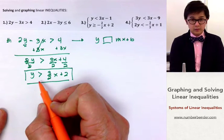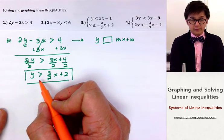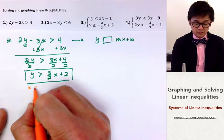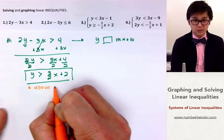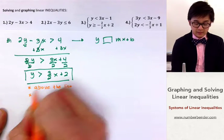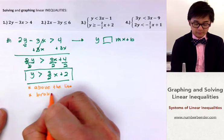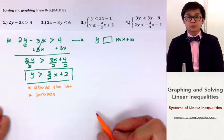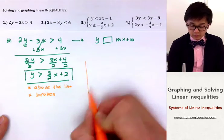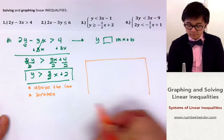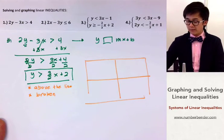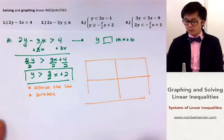Things to remember when graphing an inequality: if it's greater than or greater than or equal to, you will shade above the line. Since this is a greater than symbol, you use a broken line to denote the difference between greater than and greater than or equal to. This will be our xy plane used to graph our linear inequality.